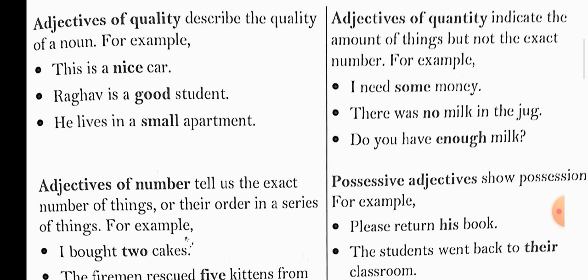Second example: There was no milk in the jug. The word 'no' is telling the amount of the milk but not the exact amount. Third example: Do you have enough milk? The word 'enough' here is the adjective of quantity.